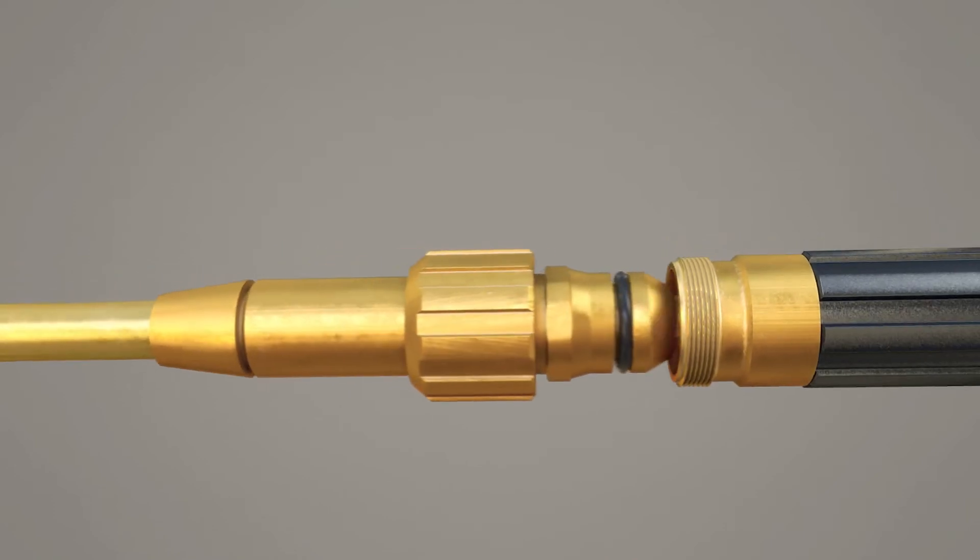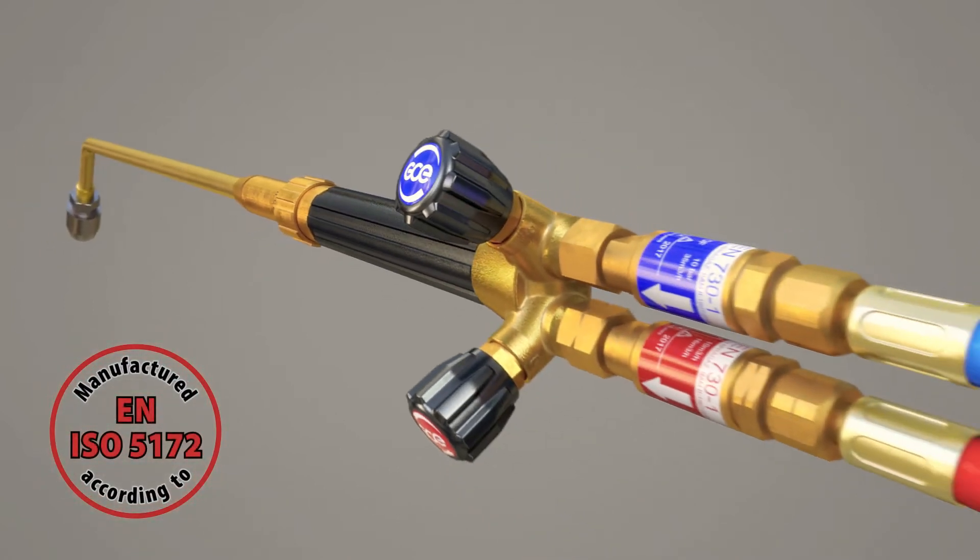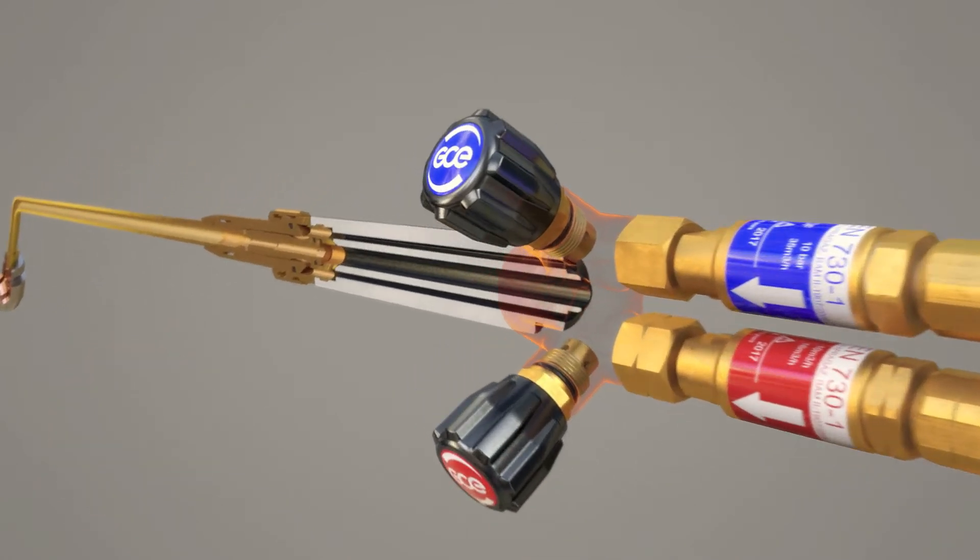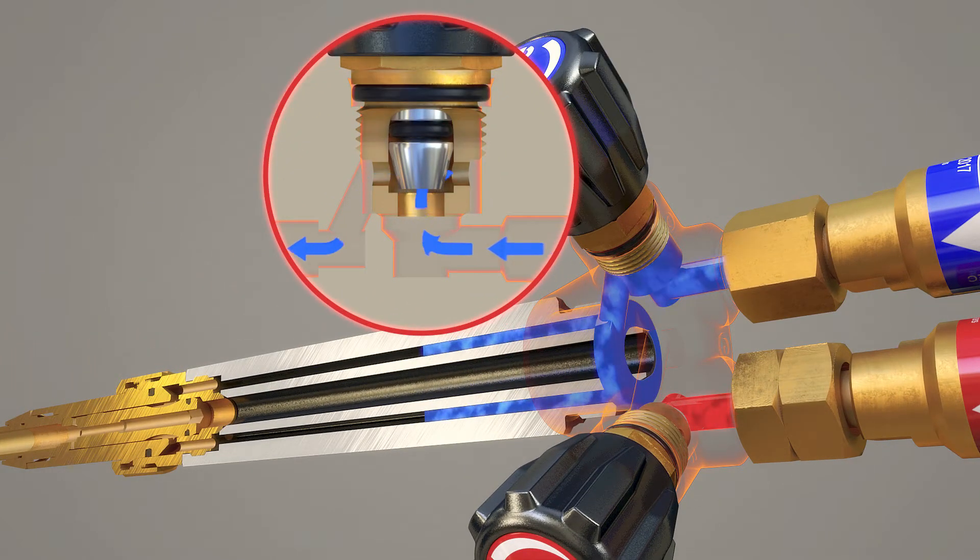The attachments are fitted to the shank via a tool-free, hand-tightened connection. The trim valves provide easy and perfect setting of the gas flow.